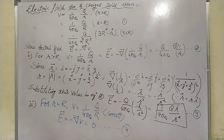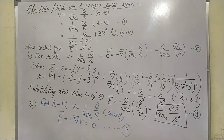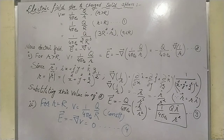We compute minus q/(4πε₀) × ∇(1/r). We use r = xi + yj + zk, and |r| = √(x² + y² + z²). The del operator gives: (∂/∂x)î + (∂/∂y)ĵ + (∂/∂z)k̂, applied to 1/r.